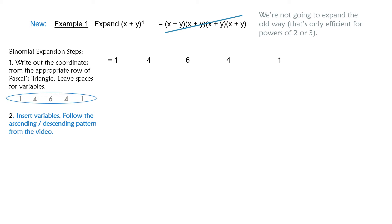Back to our example. There is a typo in step one — it says coordinates but it should say coefficients. Write the coefficients from the appropriate row of Pascal's triangle. Now we're going to insert the variables following the ascending/descending power pattern. In front of the first coefficient, I have x to the power of 4. Then descending: x to the 3, x to the 2, x to the 1, x to the 0.